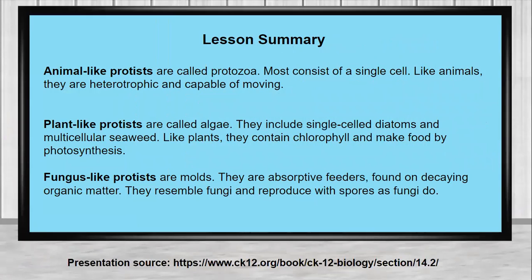To summarize this lesson, we've compared the different types of protists: animal-like, plant-like, and fungus-like. Animal-like protists are called protozoa — most consist of a single cell, and like animals they are heterotrophic and capable of moving. Plant-like protists are called algae — they include single-cell diatoms and multicellular seaweed, and like plants they contain chlorophyll and make food by photosynthesis. Fungus-like protists are molds — they are absorptive feeders found on decaying organic matter and resemble fungi in that they reproduce with spores.